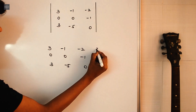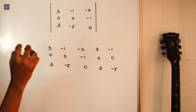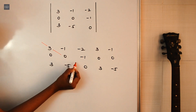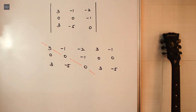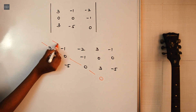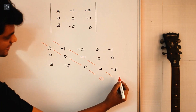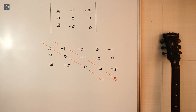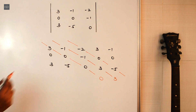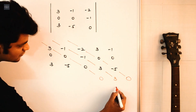Now just mark all the elements along the first forward diagonal and multiply them: 3 into 0 is 0, and 0 into 0 is 0. Then consider the next forward diagonal and multiply: -1 into -1 is +1, and 1 into 3 is 3. Similarly for the next diagonal: -2 into 0 is 0, and 0 into -5 is 0. Adding all these values: 0 plus 3 plus 0 equals 3.